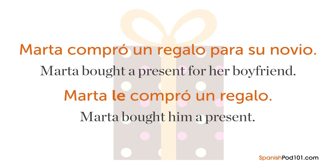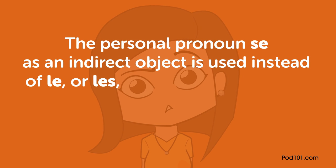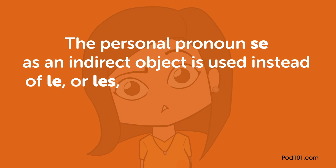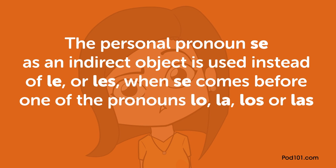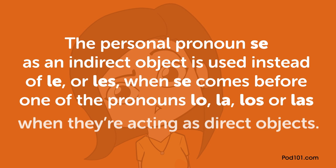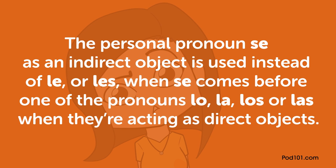In Spanish, you can say 'a él' or 'a ella' using the particle 'le,' and 'a ellos' or 'a ellas' using 'les.' Instead of 'a,' you can also use 'para.' Le and les are indirect objects, and to recognize them we have to see to whom the action of the verb goes. For example: 'Marta compró un regalo para su novio' — meaning 'Marta bought a present for her boyfriend.' We can also say 'Marta le compró un regalo' — meaning 'Marta bought him a present.'